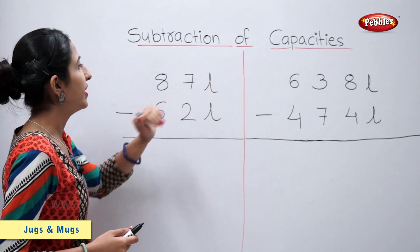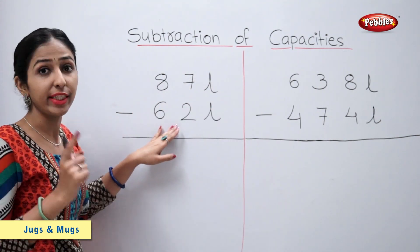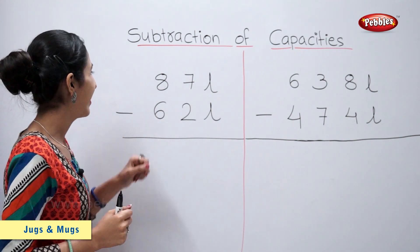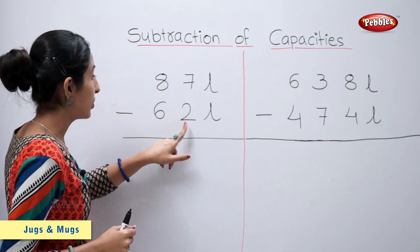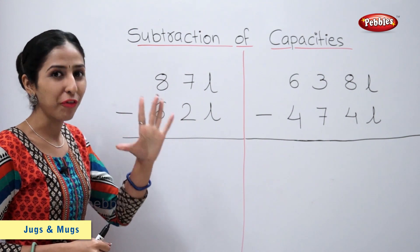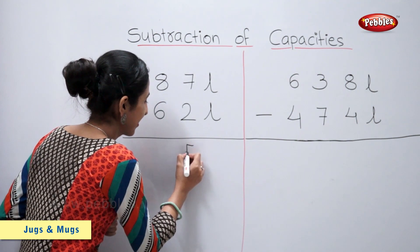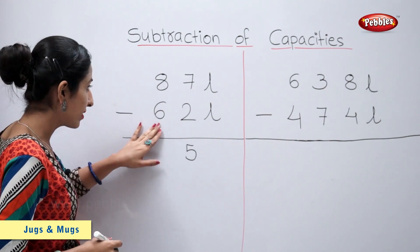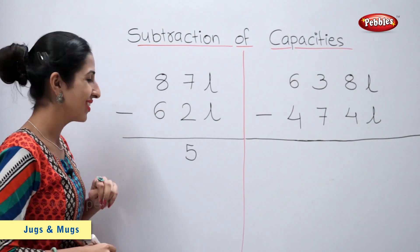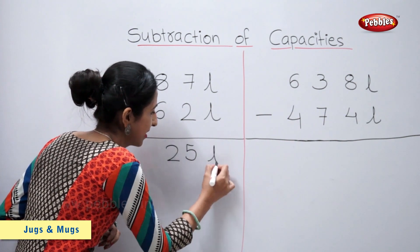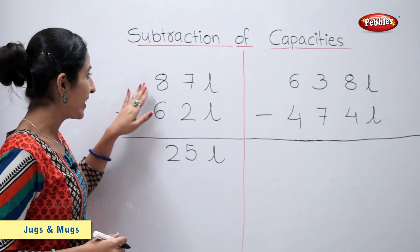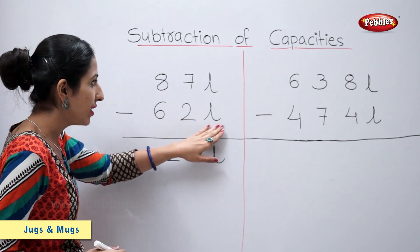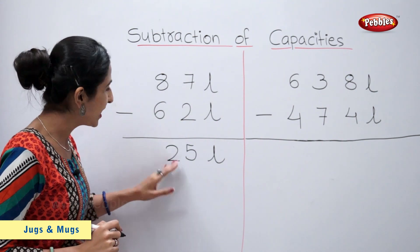87 litres minus 62 litres is equal to how much? Let's count. 7 minus 2 is equal to 5. 8 minus 6 is equal to 2. So, 87 litres minus 62 litres is equal to 25 litres.